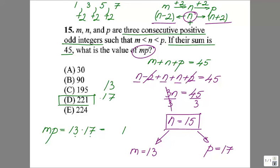13 times 17: 7 times 3, 21, 7 times 1, 7, plus 2, 9. 1 times 3, 3, 1 times 1, 1. If you add them up, you have 1, 9 plus 3, 12, 1 plus 1, 221.